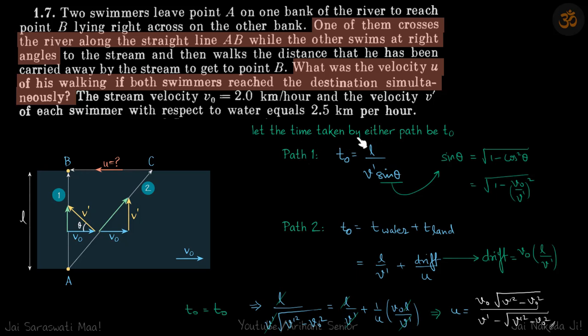So let the time taken by either path be T0. In path 1, T0 is L upon this velocity and this velocity is V dash sine theta. So L by V dash sine theta, sine theta we will get from here sine theta is root of 1 minus cos square theta and cos theta you can see is V0 upon V dash. So this becomes this.